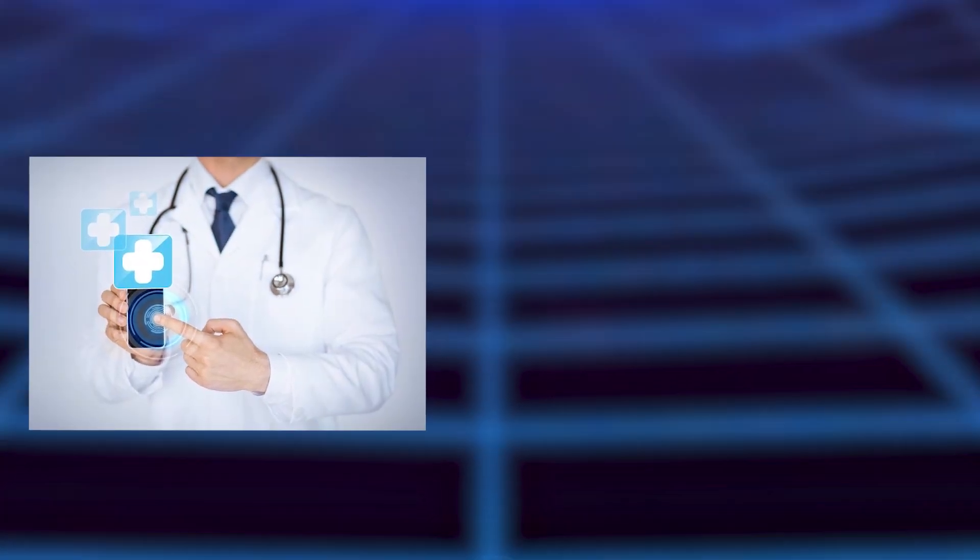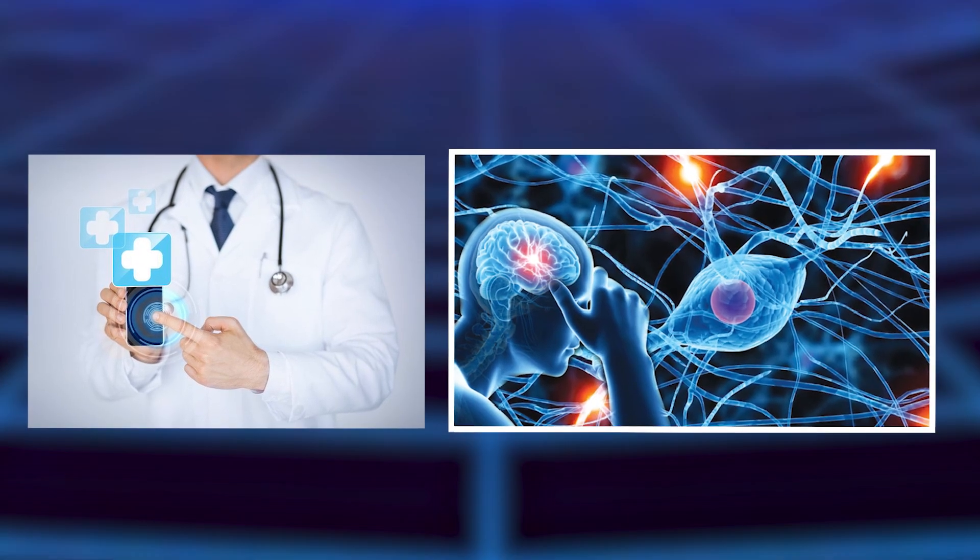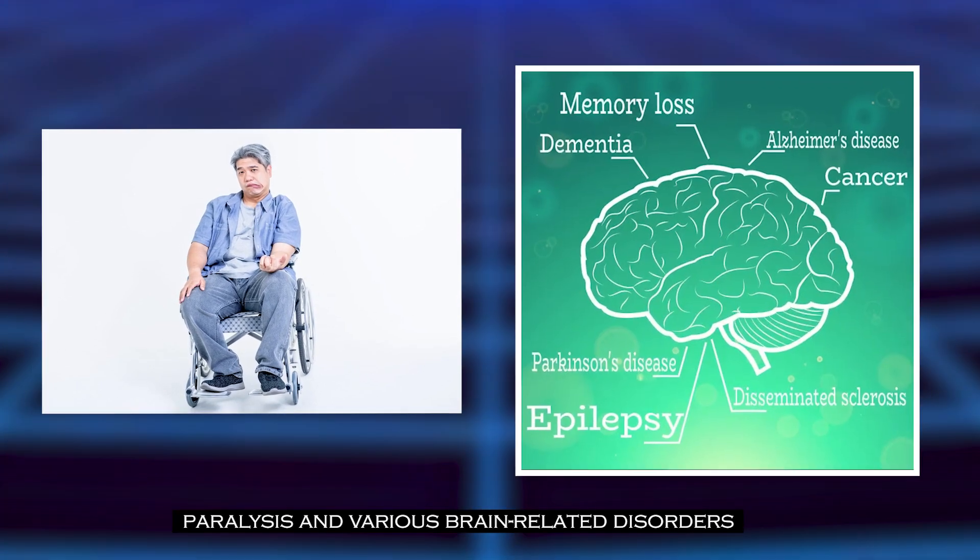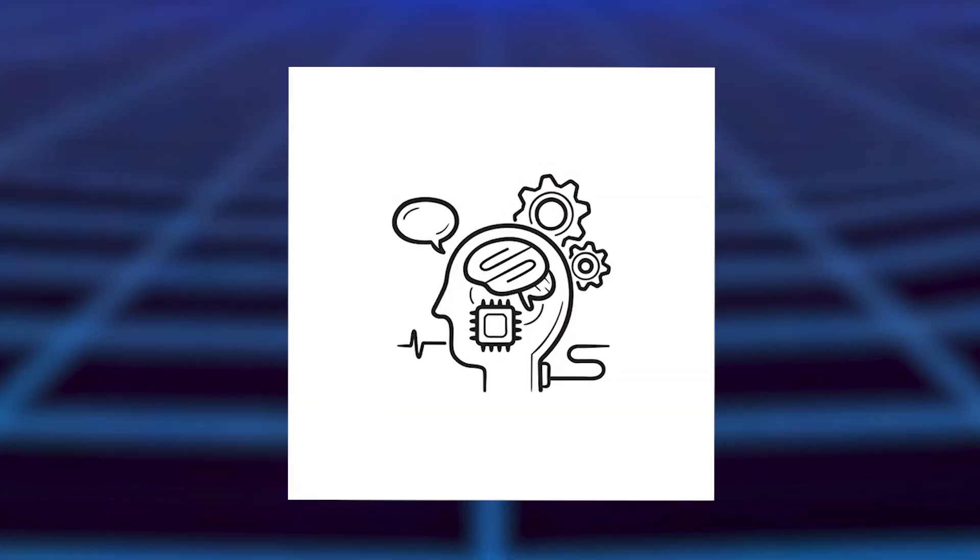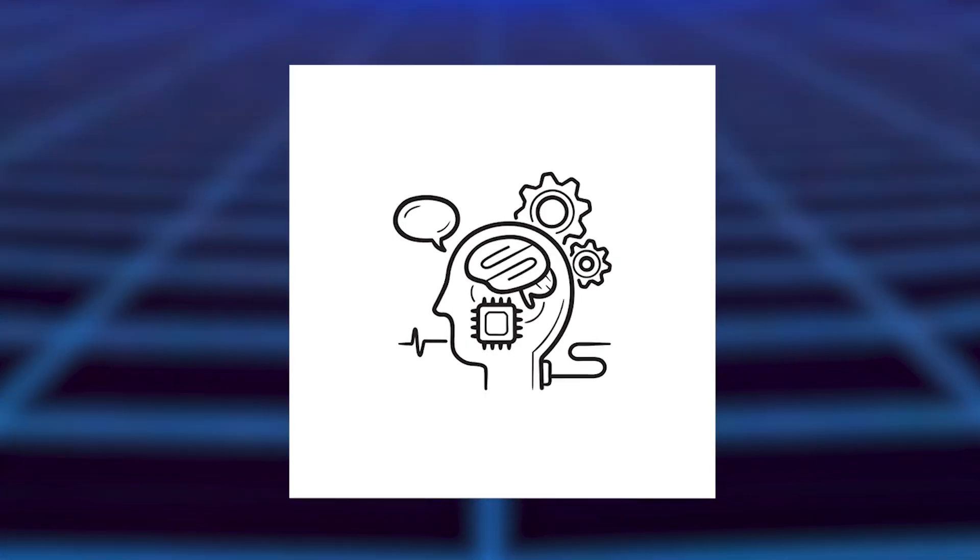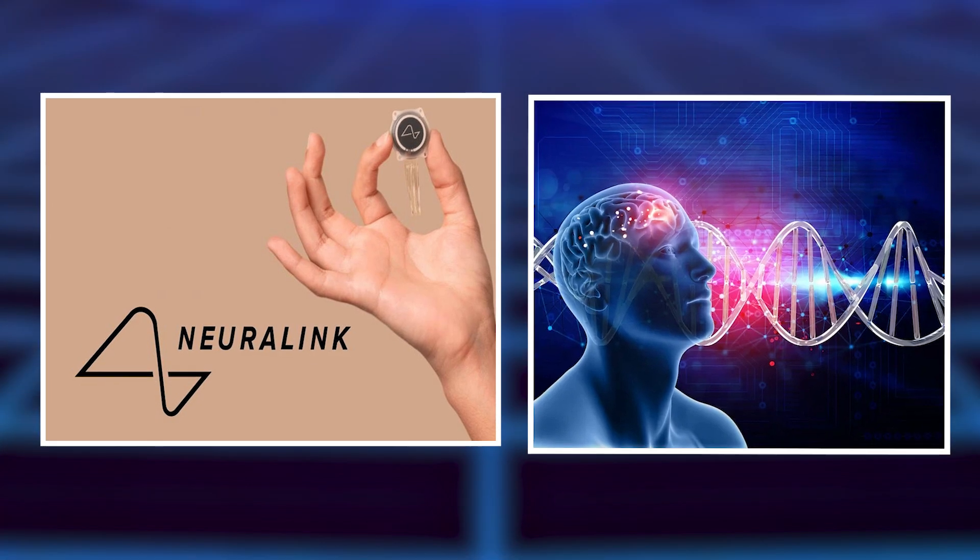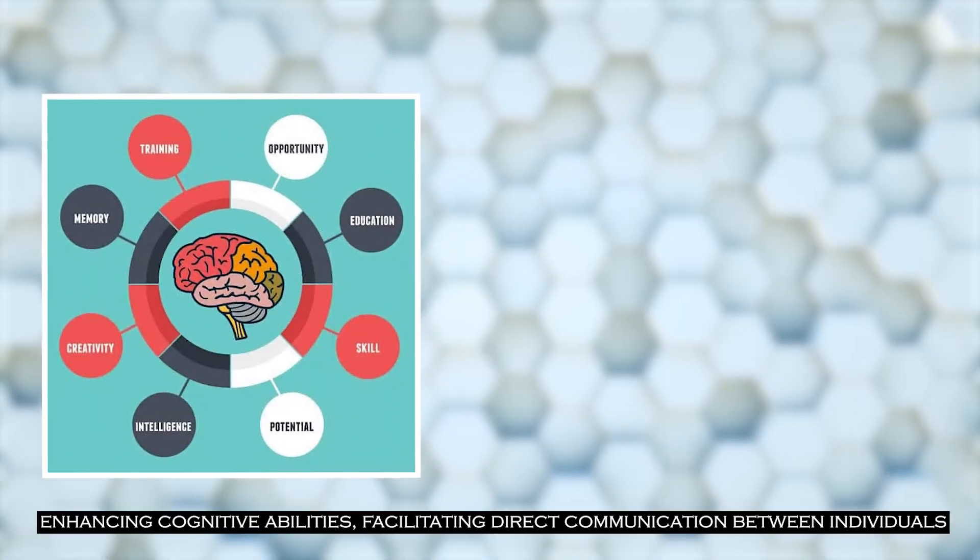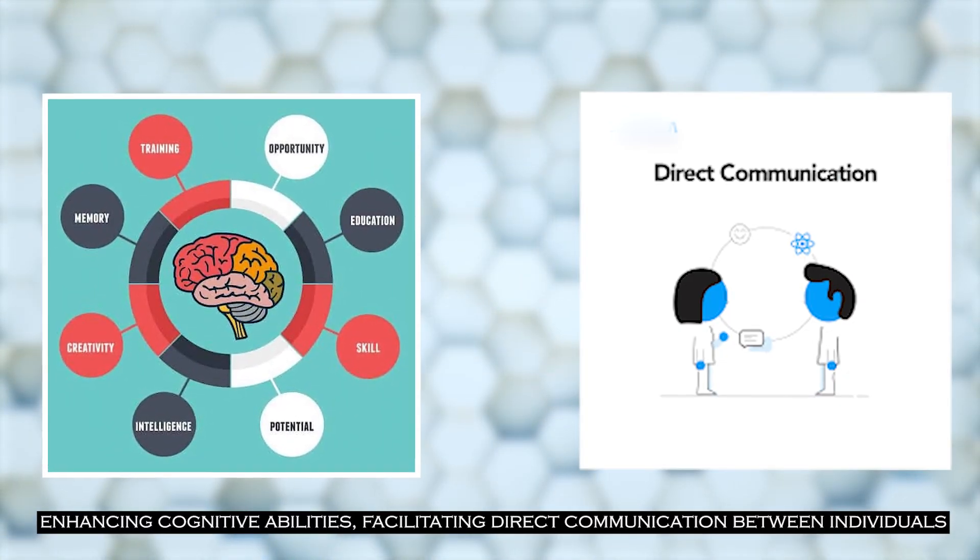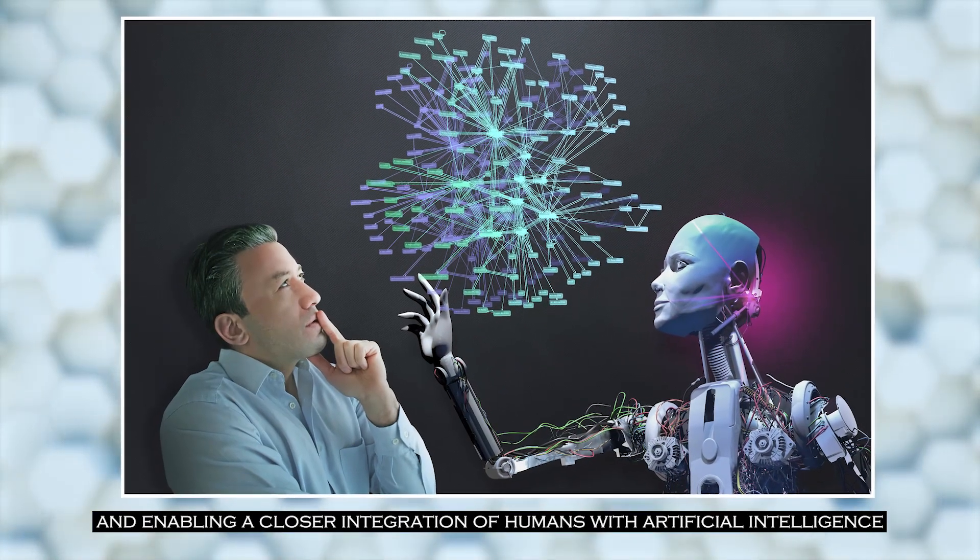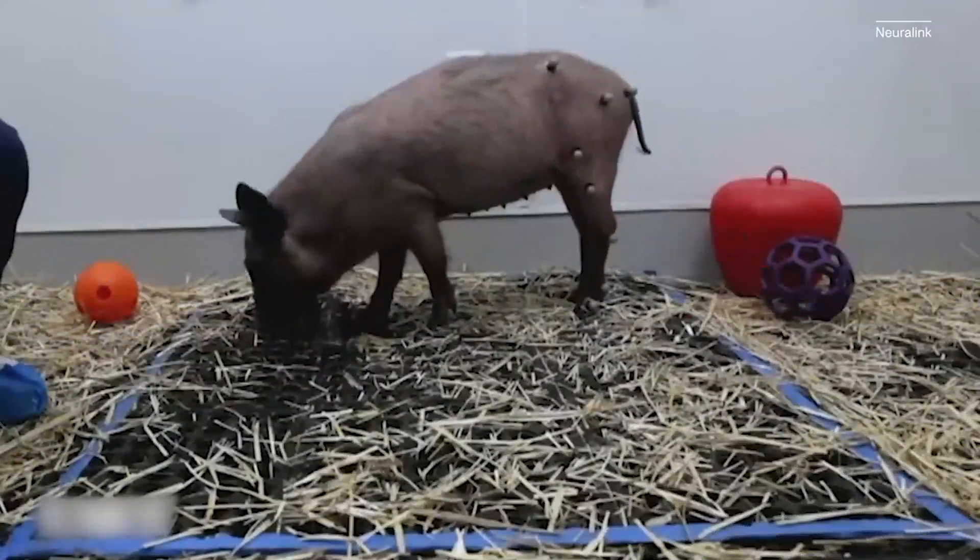Neuralink's initial focus has been on medical applications, particularly in the treatment of neurological conditions, such as paralysis and various brain-related disorders. By establishing a direct interface between the brain and external devices, Neuralink aims to provide solutions for restoring lost motor functions and addressing other neurological challenges. The company has also discussed the potential for broader applications beyond medical use, including enhancing cognitive abilities, facilitating direct communication between individuals, and enabling a closer integration of humans with artificial intelligence.